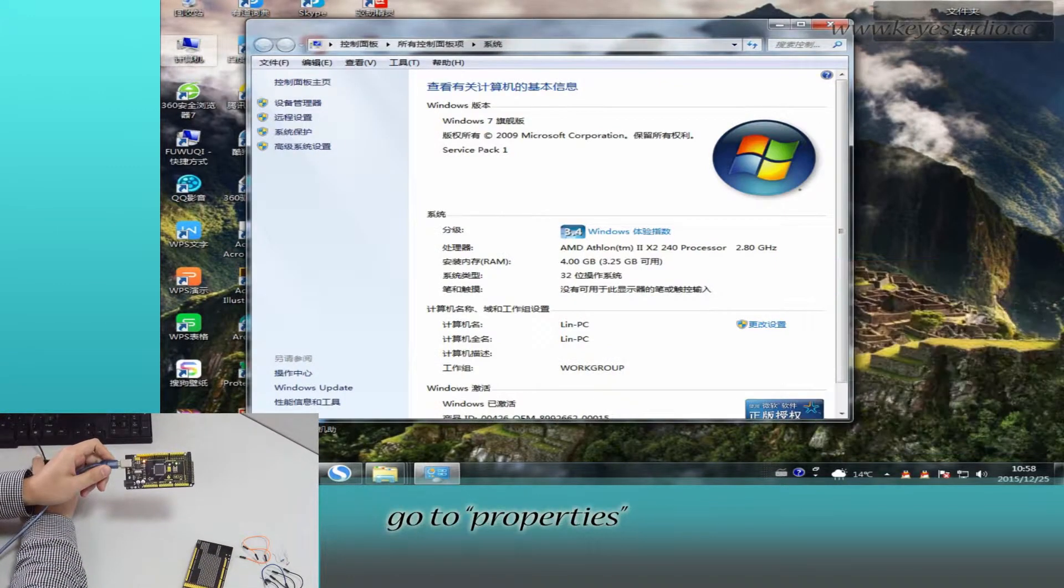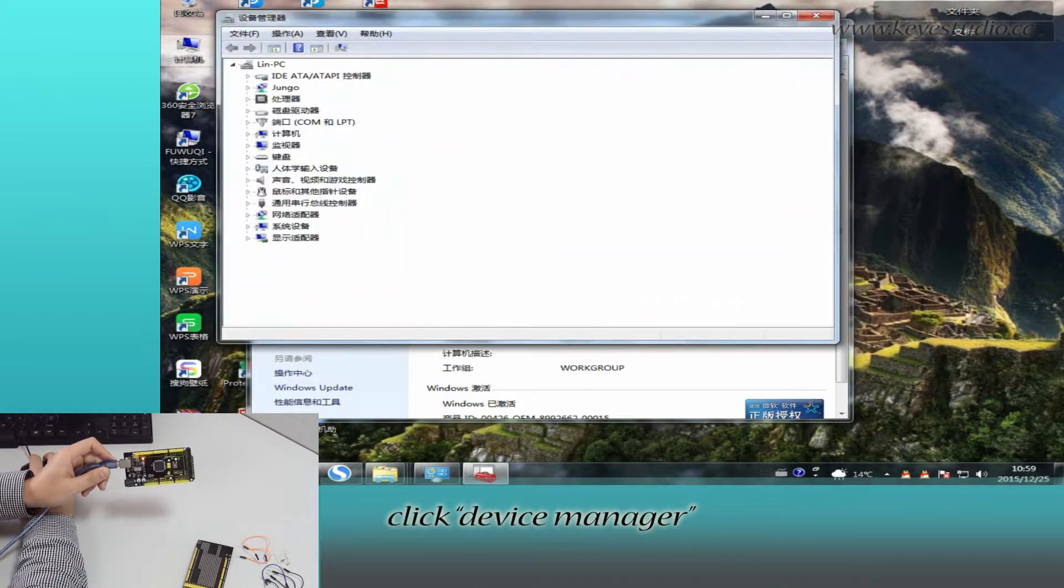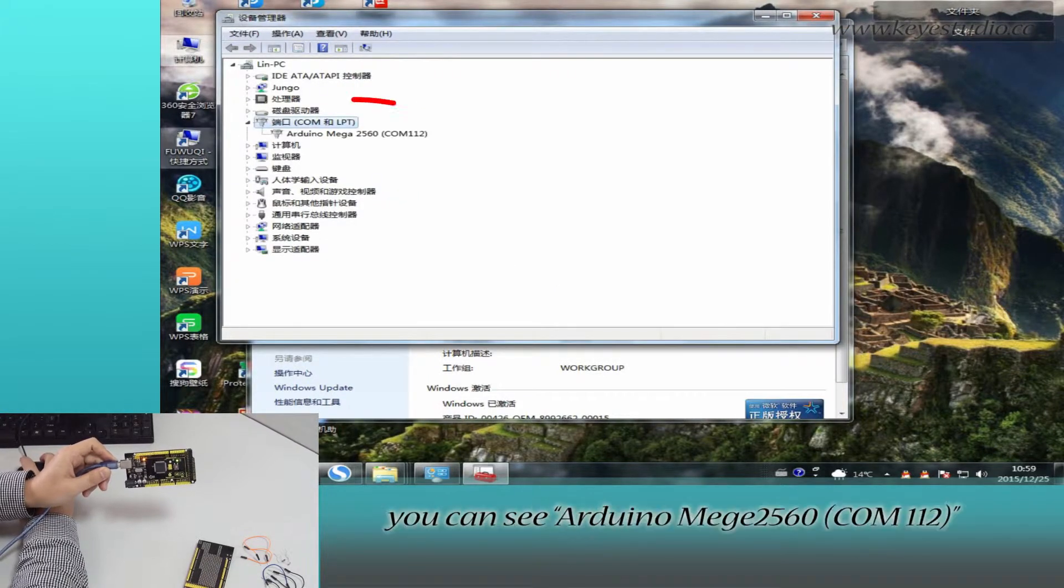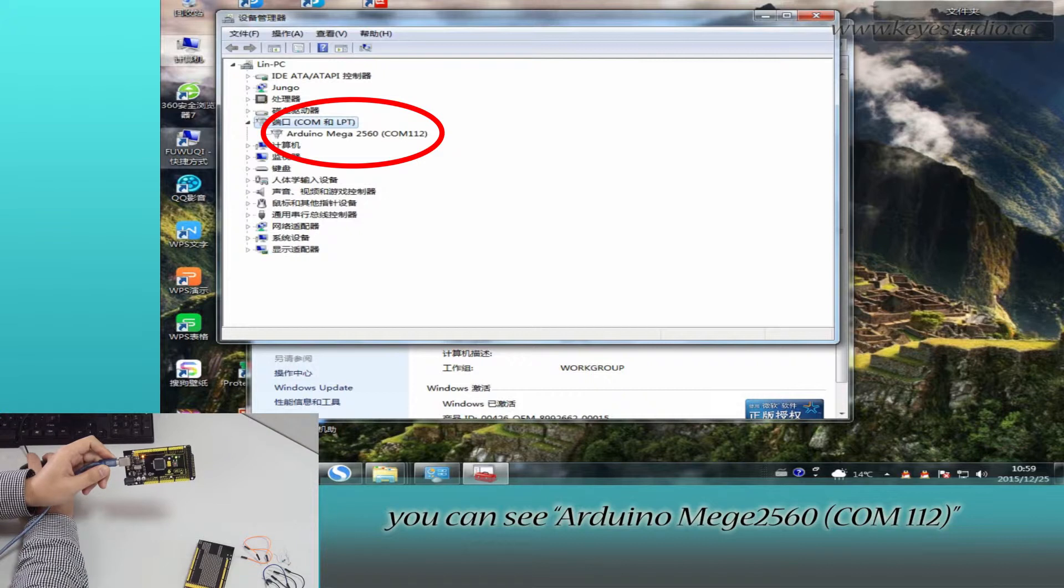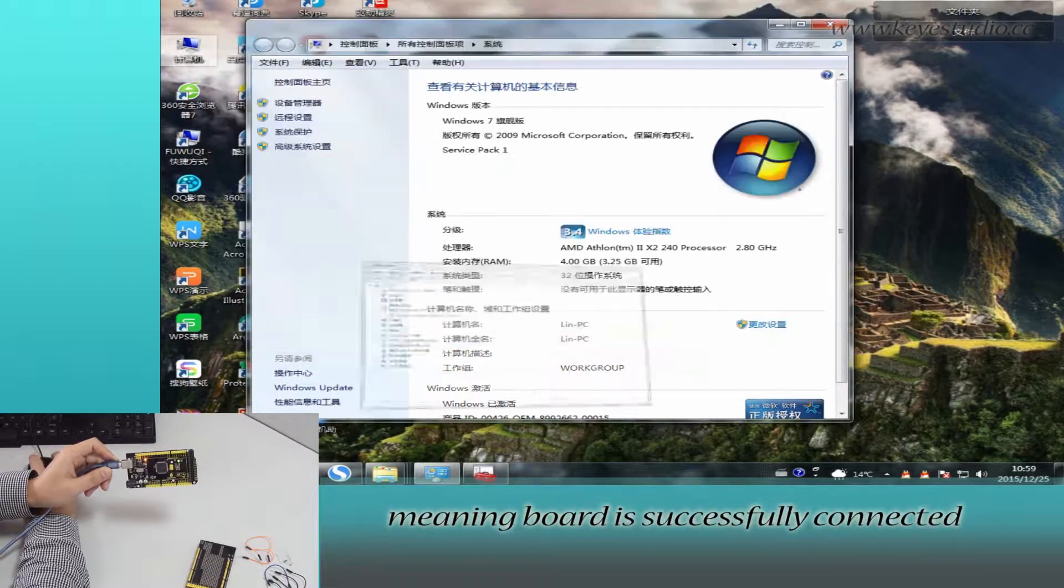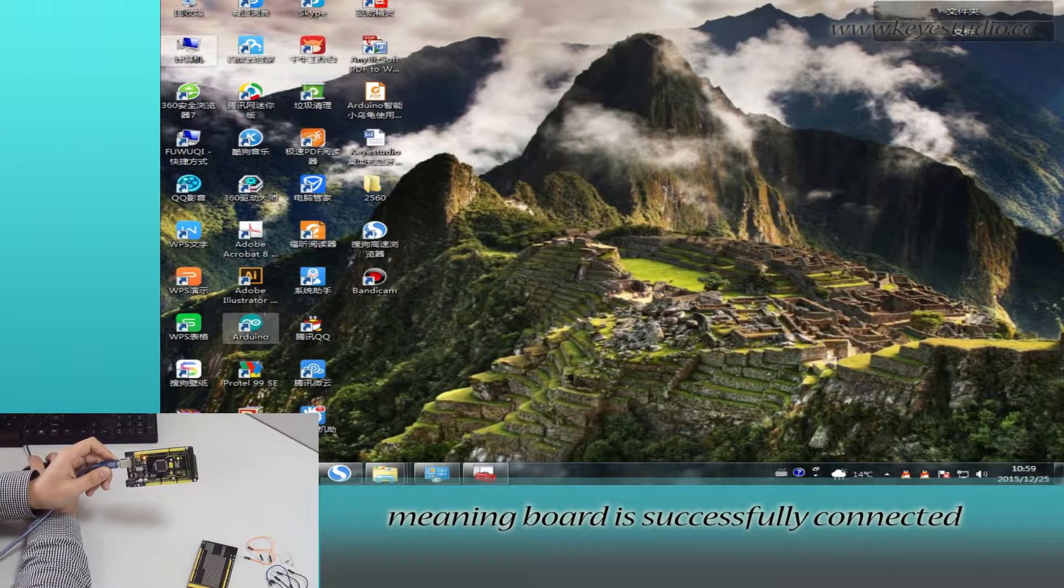Right-click Computer, go to Properties, click Device Manager, and click Port. You can see Arduino Mega 2560, COM 112, meaning the board is successfully connected.